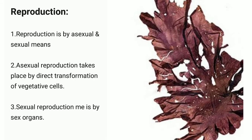Reproduction in Porphyra: reproduction is by asexual and sexual means. Asexual reproduction takes place by direct transformation of vegetative cells. Sexual reproduction is by sex organs.